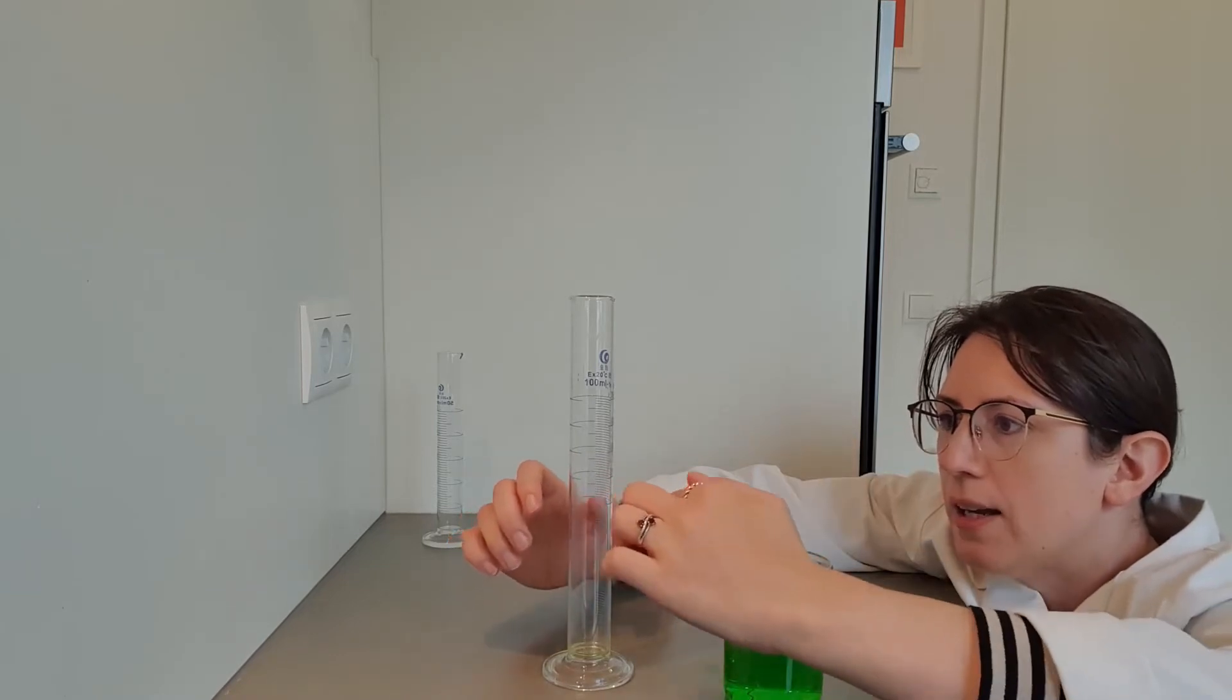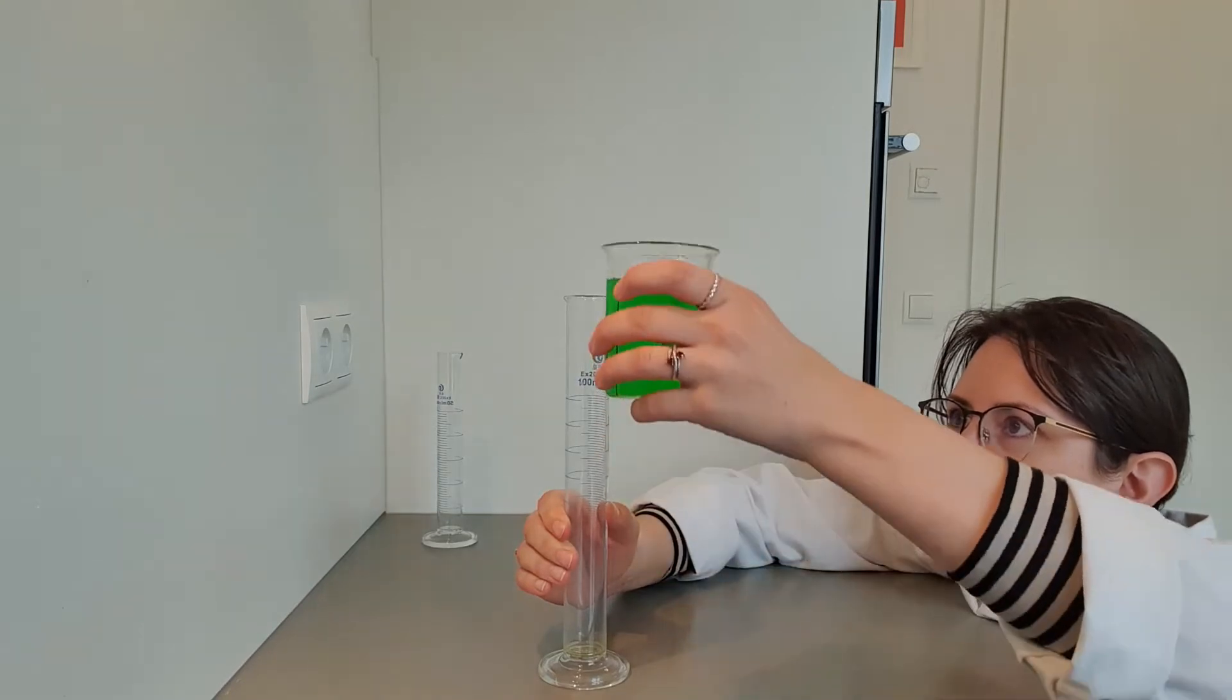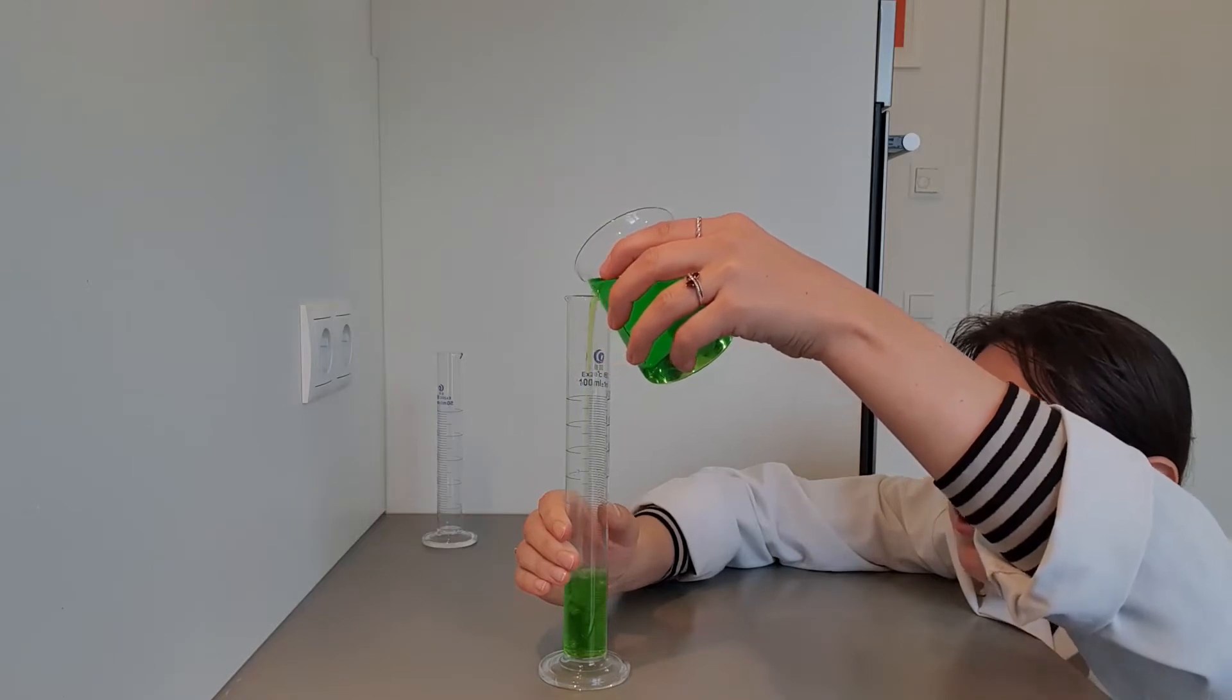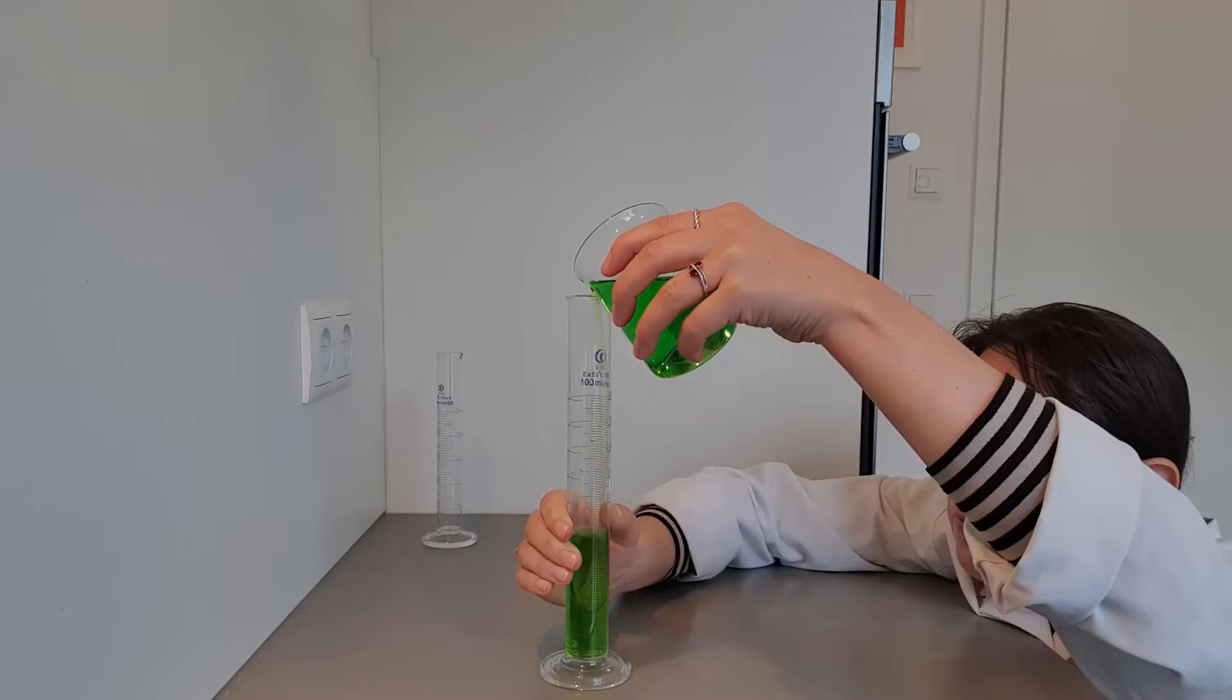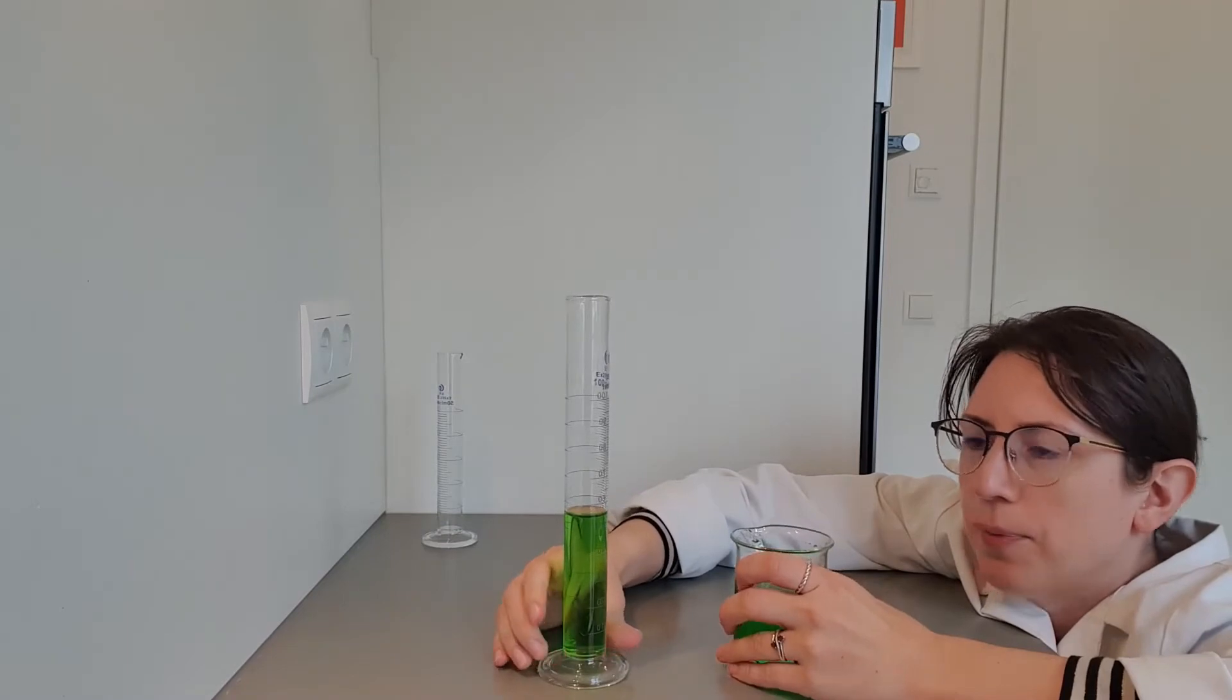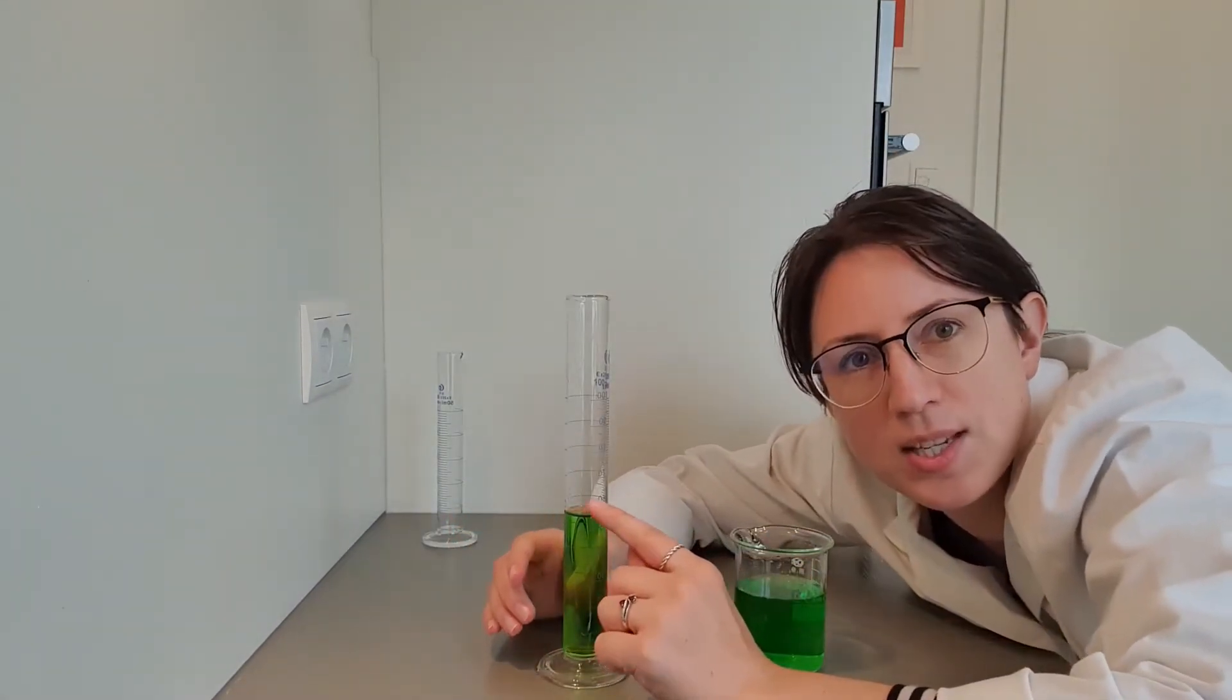So now I'm going to pour... gorgeous green! Now, as I approach 60, I'm going to slow down because what I want is the meniscus line to sit straight on the 60 line.